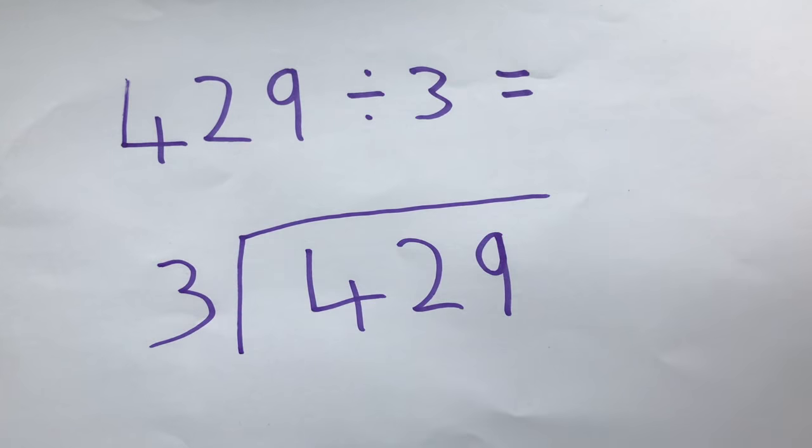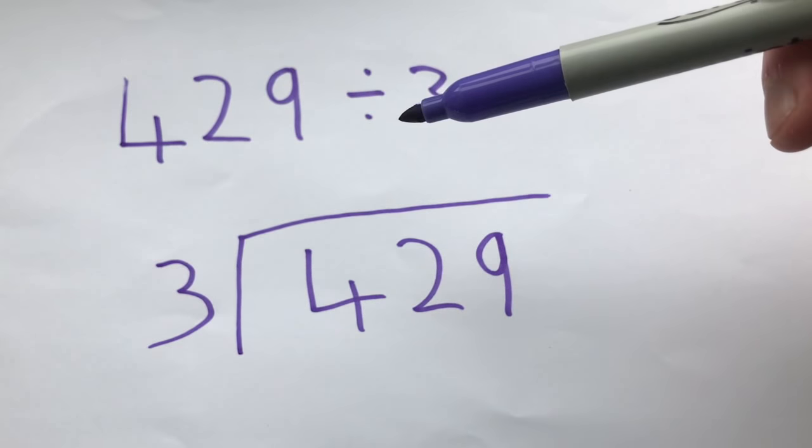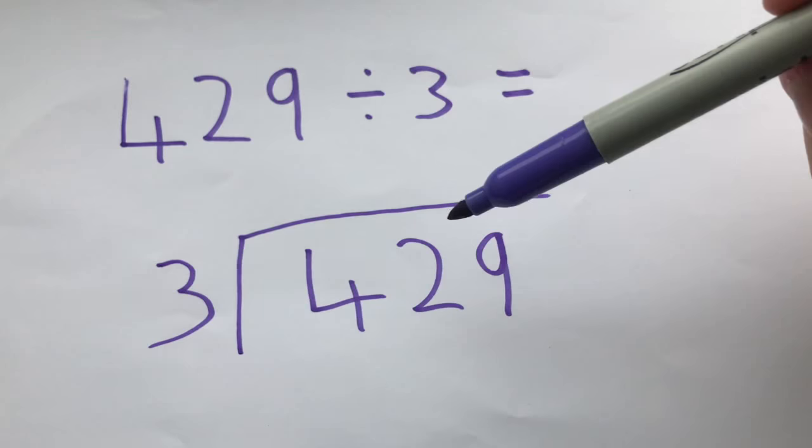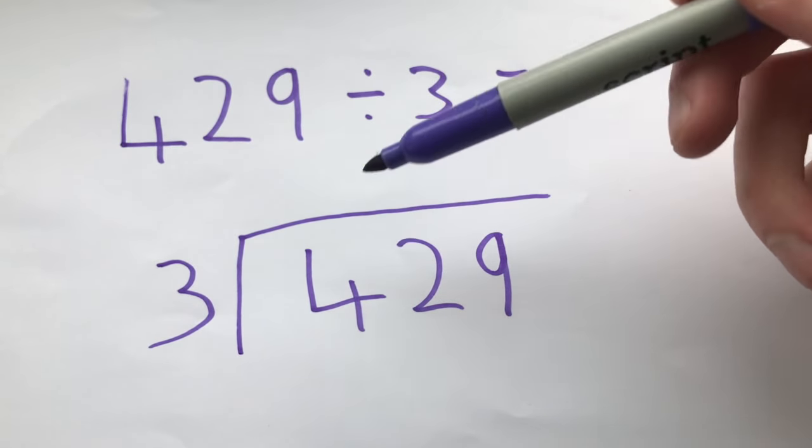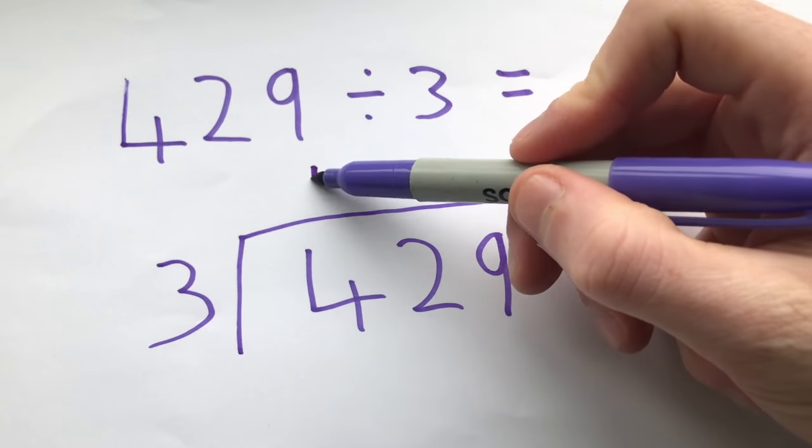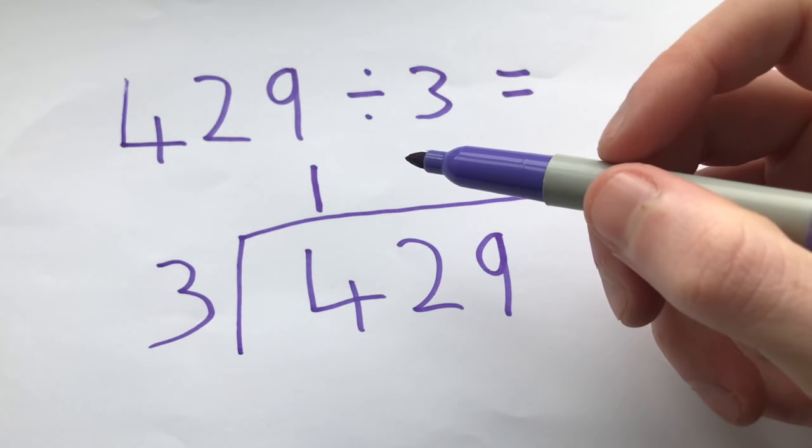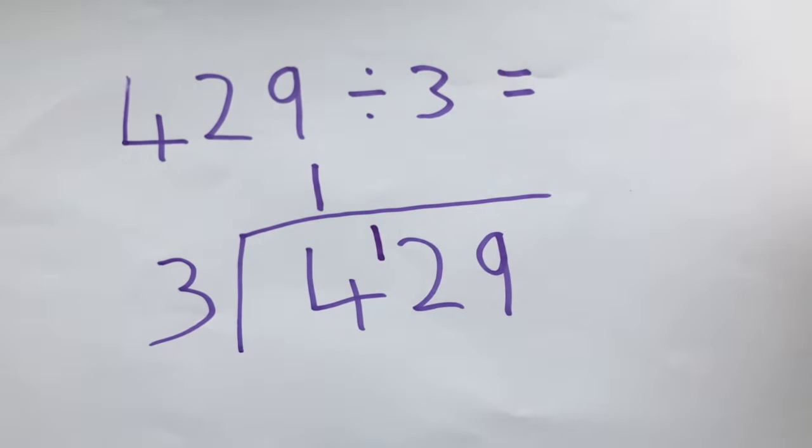Now all we do is we look at our number and we go across and see how many times does this fit into these numbers. I know that three fits into four once, so I put my number one there. I have one left over, so I carry that one and I place that there.